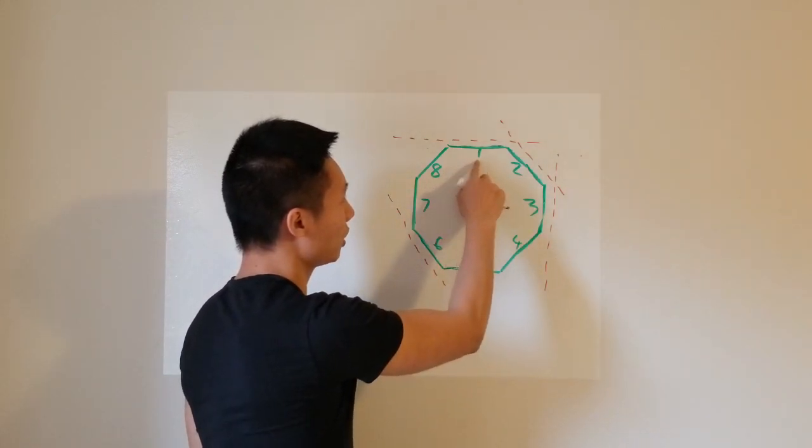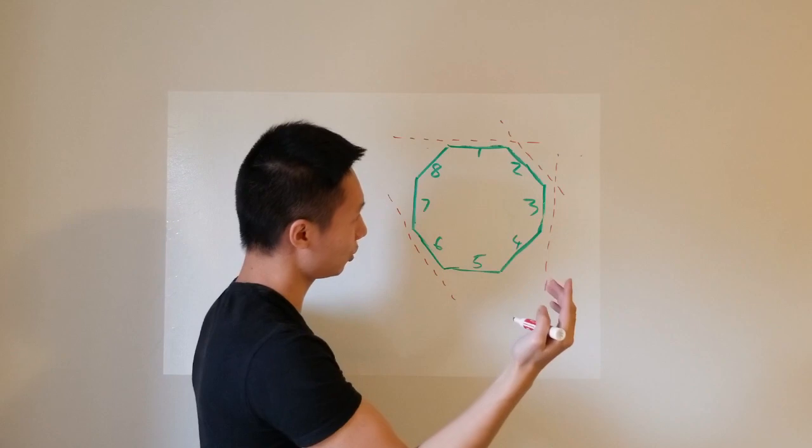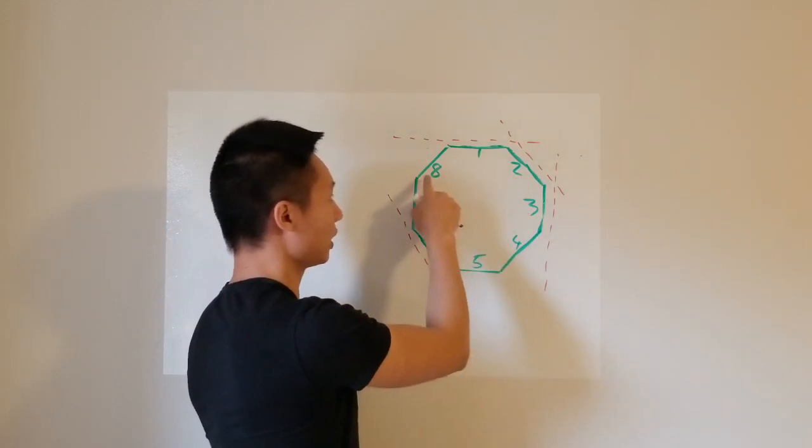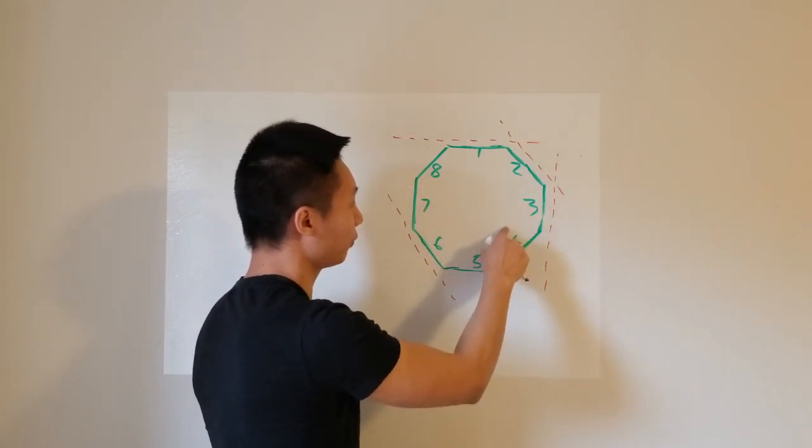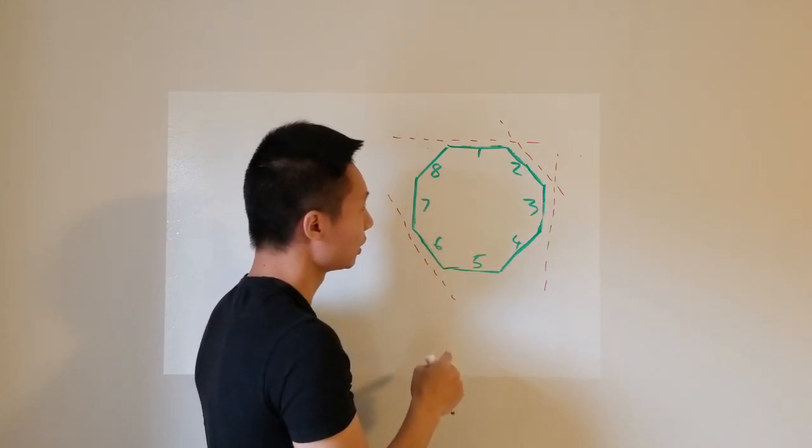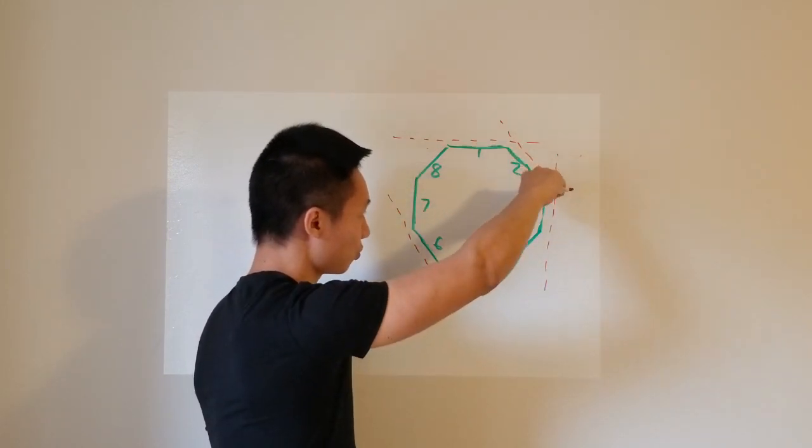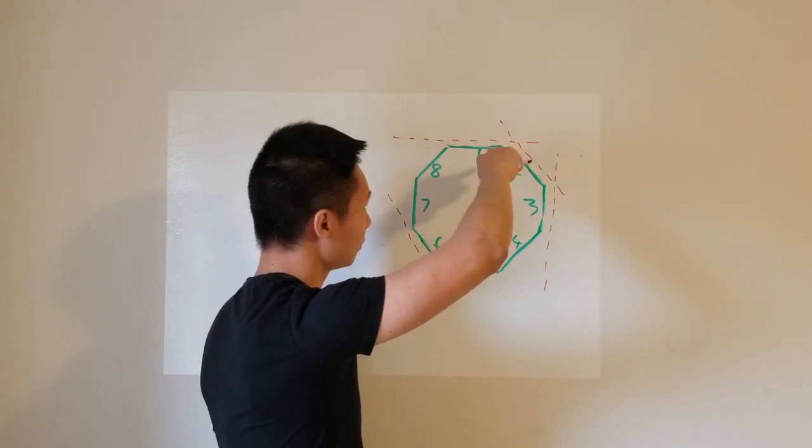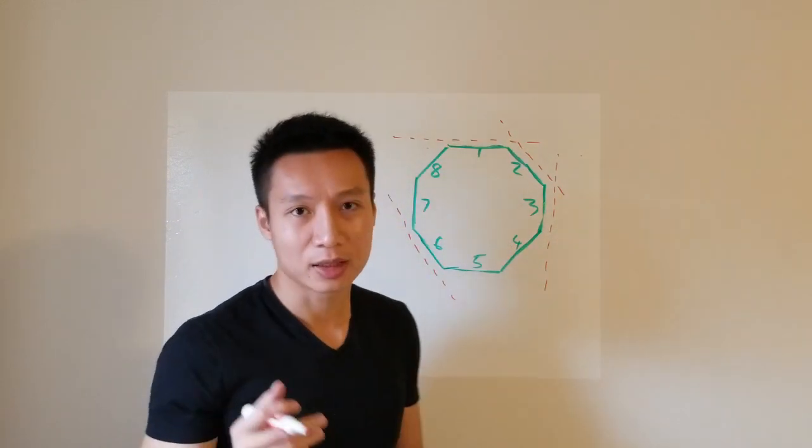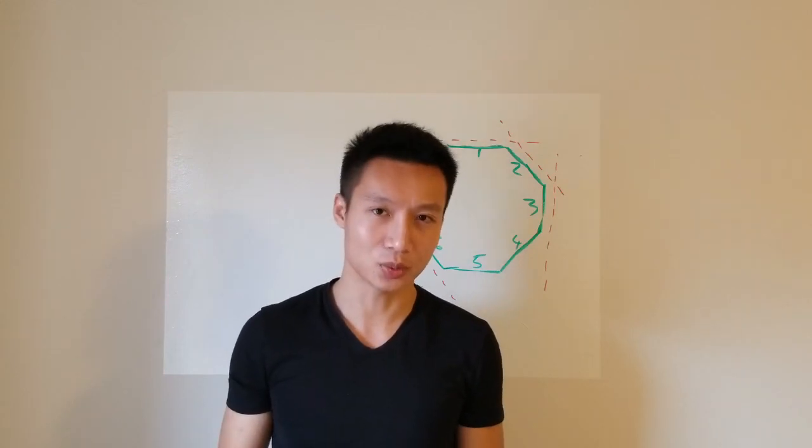So we see that we can choose 1, 2, and 3. Or we can choose 2, 3, and 4 paired with 7. Or I can choose 3, 4, and 5 paired with 8. So we can rotate this really around the clock. So from 1 till 8, we have, in total, 8 choices for case 1.